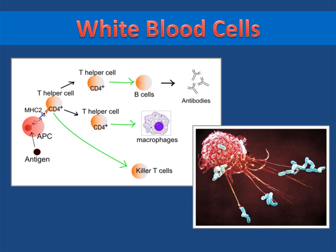There are many different kinds of white blood cells inside the body. T cells perform a wide variety of functions including helping other white blood cells mature. Macrophages engulf and digest harmful pathogens like bacteria. And B cells produce antibodies and give an animal immunity against future infections.